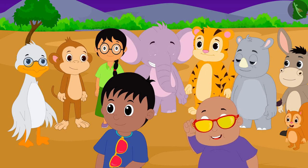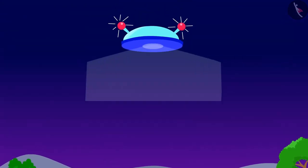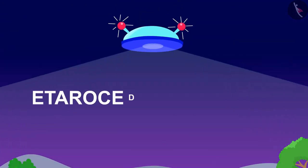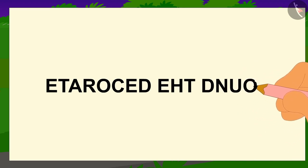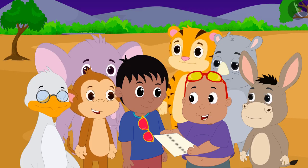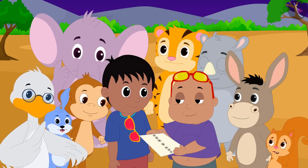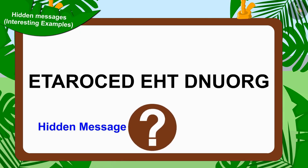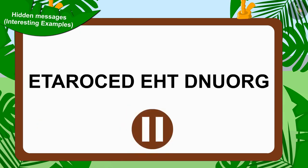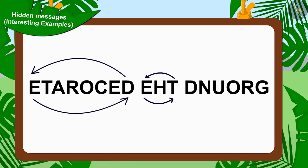Now Bablu looked at the sky with his unique glasses and saw the next hidden message there. Bablu immediately wrote this message on a paper and read it to all the villagers. All the villagers once again started solving Jeev's hidden message. Children, can you solve this hidden message? If you want, you can find the answer by stopping the video. Well done kids, your answer is absolutely correct.